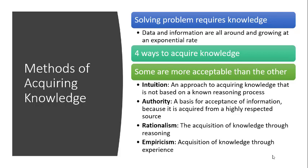The four methods include intuition, authority, rationalism, and empiricism. The first one — intuition — is based on your gut feeling: how you feel about the situation and what you think could be done, all coming from within. It has its shortcomings and classic limitations. The next one is authority, whereby we approach somebody we believe has better knowledge about a particular issue in order to get knowledge.